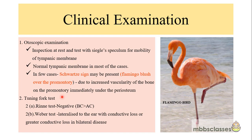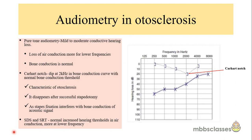On tuning fork testing, Rinne's test will be negative, meaning bone conduction is greater than air conduction. Weber's test will lateralize to the ear with the greater conductive loss; in bilateral disease, it lateralizes to the ear with the greater degree of conductive hearing loss.